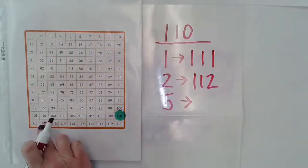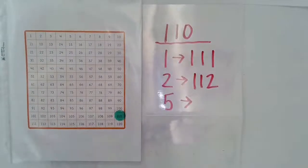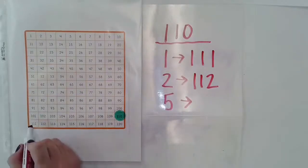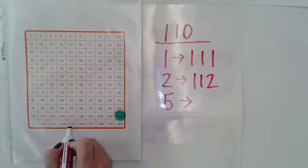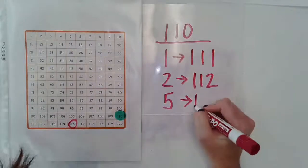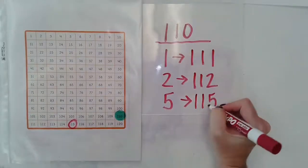So for my last one again, I'm going to keep my marker here at 110, and I'm going to count up by five. So one, two, three, four, five, which gives me 115.